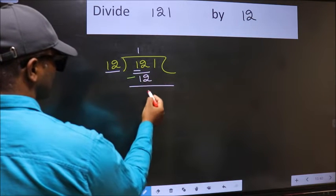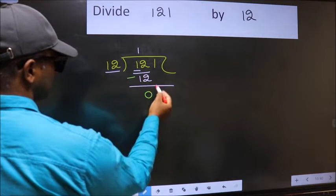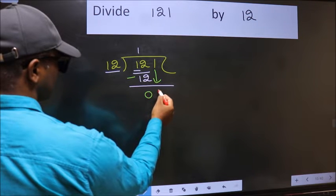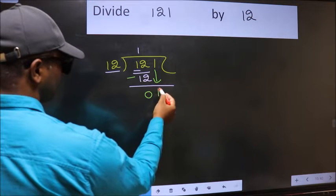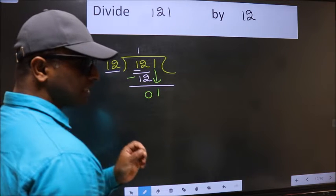12 minus 12 is 0. After this, bring down the beside number, so 1 down. After this step, the mistake happens.